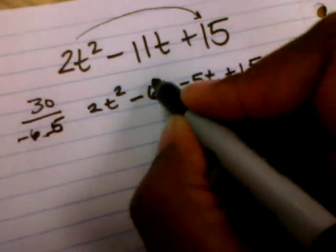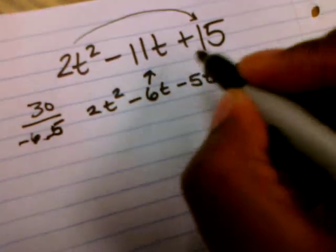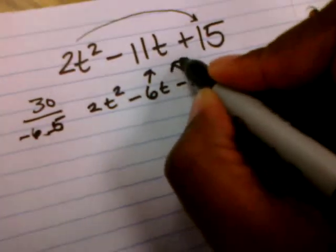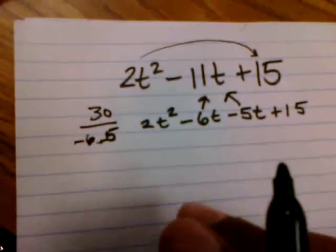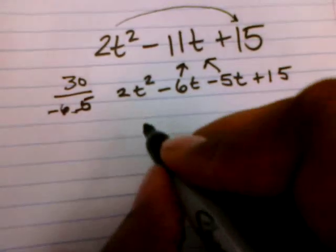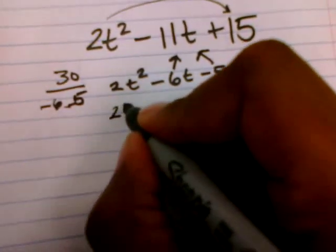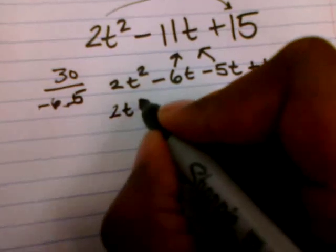The reason why I can do this is because a negative 6t plus a negative 5t is going to give me a negative 11t. So it all works out. Now I'm going to separate these terms using the associative property, or what we call grouping.